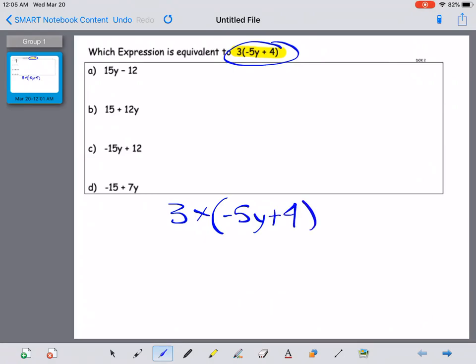Okay, in all reality, what we're doing is 3 times negative 5y, but we're also going to do 3 times positive 4 as well.